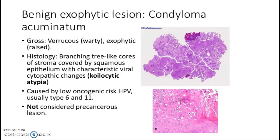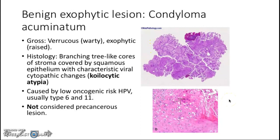Relevant exophytic lesions include condyloma acuminatum. Grossly, it will present as a verrucous or warty appearance with raised exophytic appearance. Histologically, you will see a branching tree-like course of stroma covered by squamous epithelium, surrounded by epithelial cells, and covered with characteristic viral cytopathic changes or koilocytic atypia. The koilocytic atypia is shown by the perinuclear halo surrounding the nucleus. Condyloma acuminatum is caused by low oncogenic risk HPV, usually type 6 and 11, and therefore is not considered a precancerous lesion.